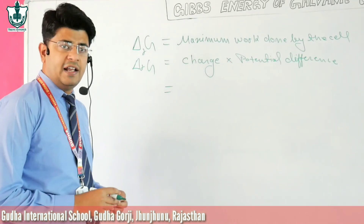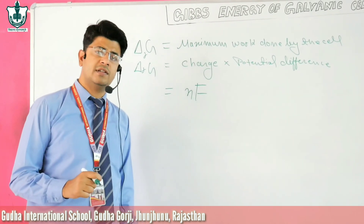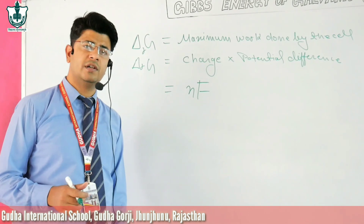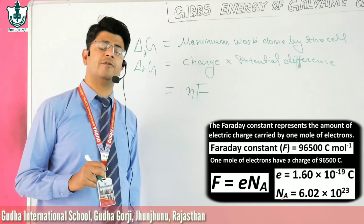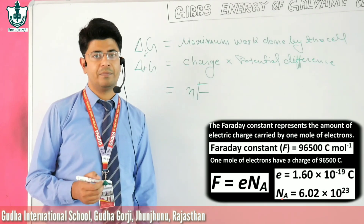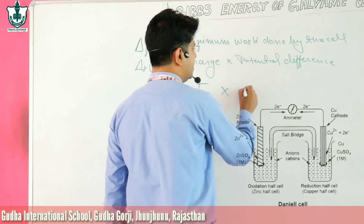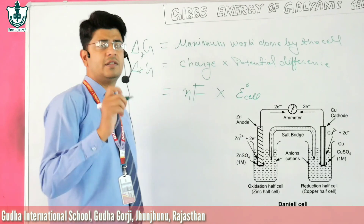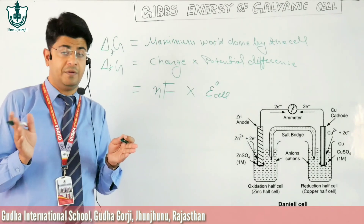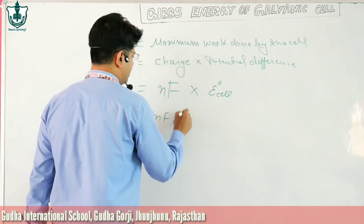The charge for the galvanic cell is given by nF, where n stands for the number of electrons transferred in one redox reaction. For example, in the Daniel cell using zinc and copper, the value of n is 2. F stands for the Faraday constant, which equals 96,500 coulombs per mole. So nF represents the total charge. The potential difference is denoted by E°cell — the standard condition requires the electrolyte concentration to be 1 M, or 1 mole per liter. Therefore, ΔrG = nFE°cell.